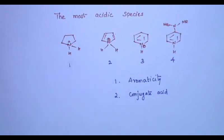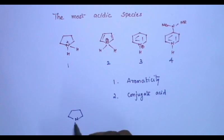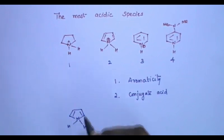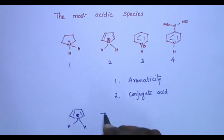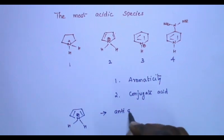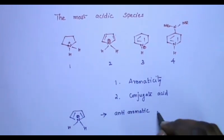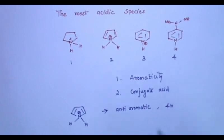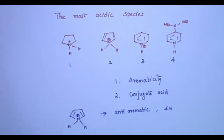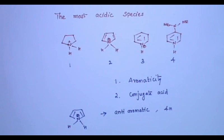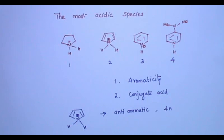I go for the second compound. This compound has a positive charge — it is anti-aromatic. You can count the electrons: there are four pi electrons. The lone pair has been used to form a bond with hydrogen. Because of that, it is anti-aromatic, so it is highly unstable.